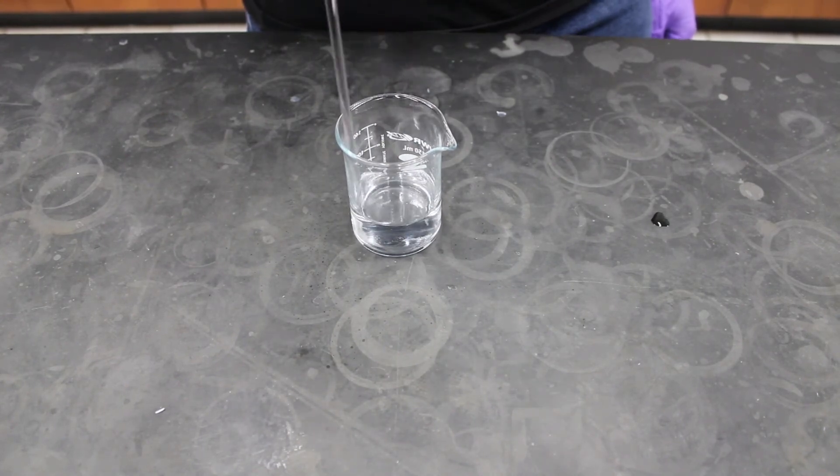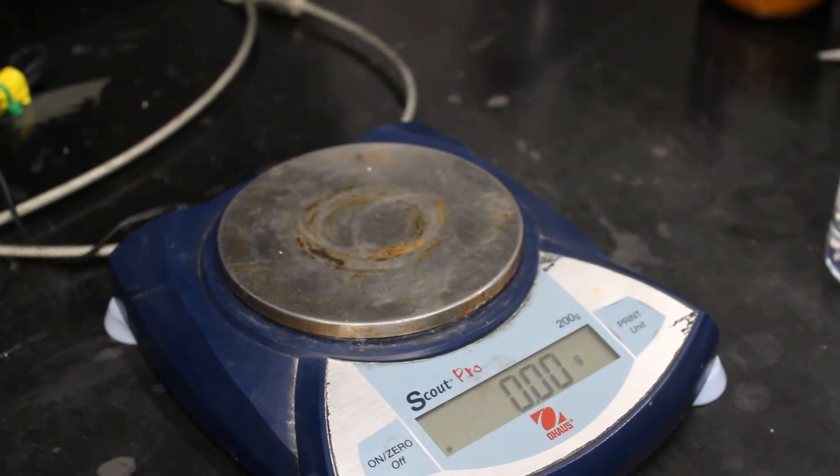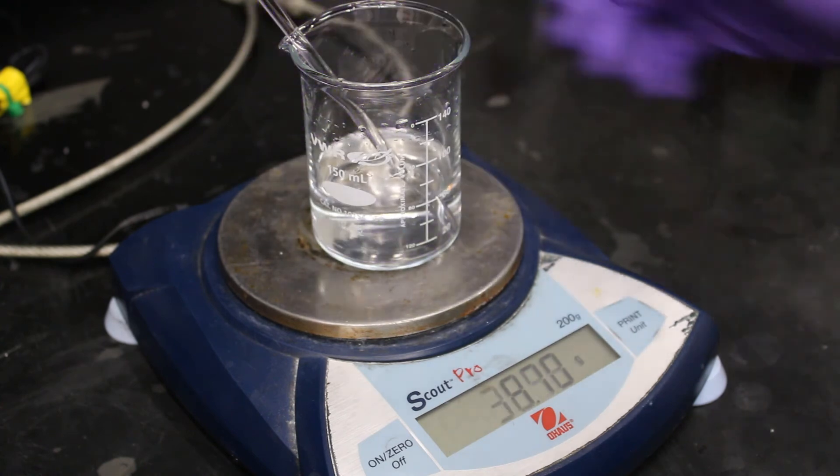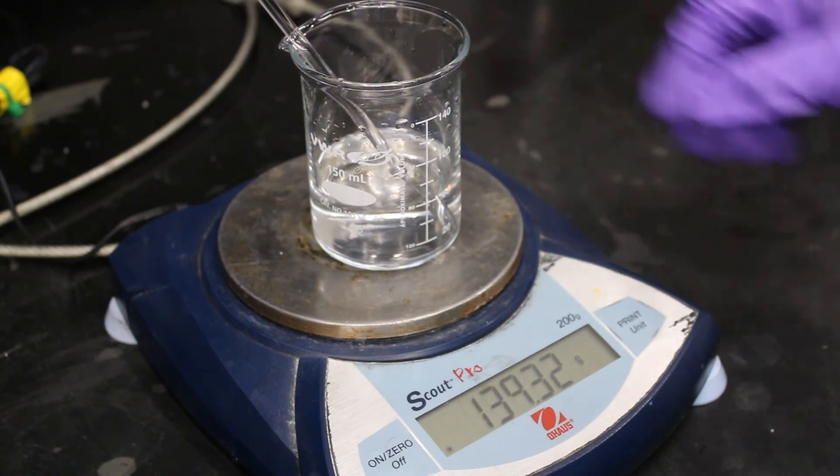Once all bubbles have disappeared and the solution is completely clear, weigh the beaker, solution, and glass rod. Note down the mass in your notebook with the correct number of decimal places in grams.